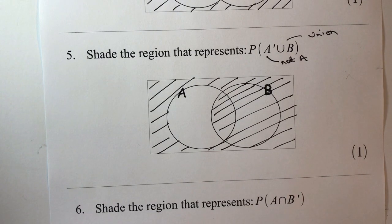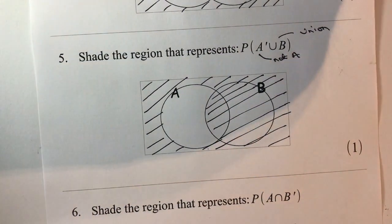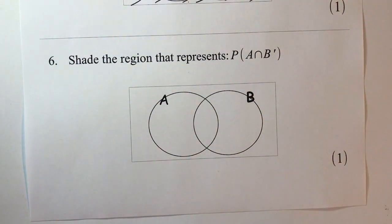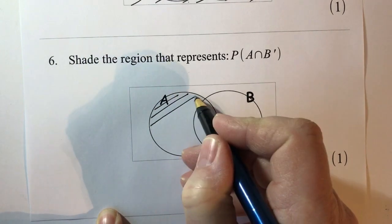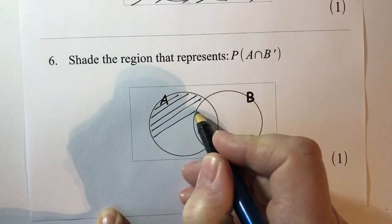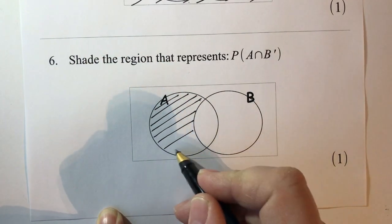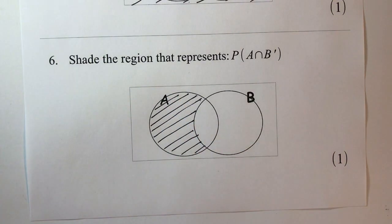Again we've got a very similar situation in question number six, and this is going to be the last example in this particular video. We've got shade the region that represents the probability of A and not B. So if it's A but not B, it's going to be the people within this region that don't really have anything to do with B.